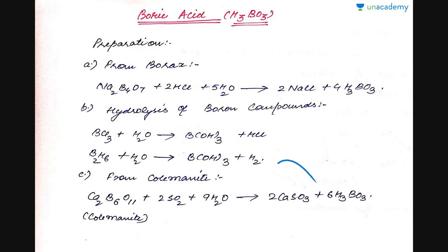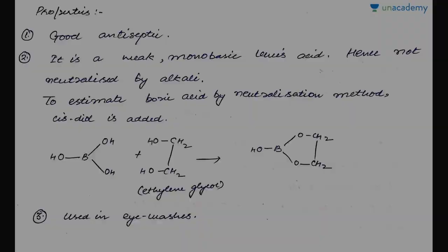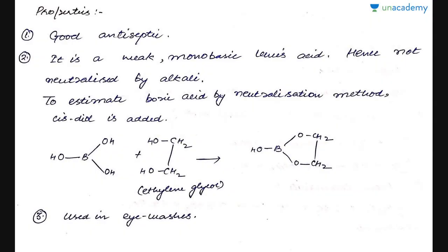Columninite Ca2B6O11 on treatment with sulfur dioxide in presence of water gives calcium sulfite CaSO3 plus boric acid.